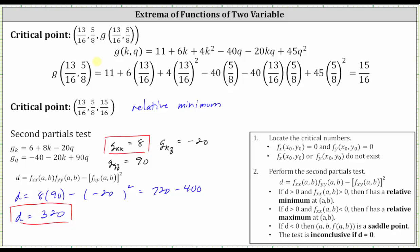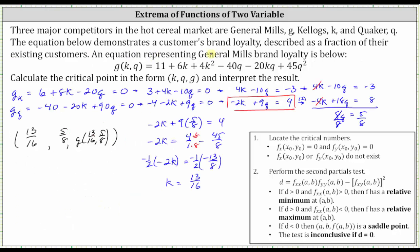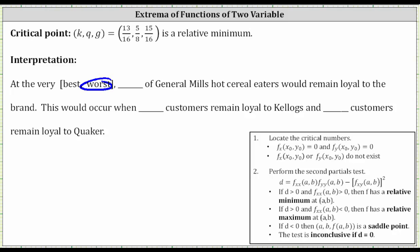Normally the location is the ordered pair k comma q — the first two values in the ordered triple — and the function value 15/16 is the actual relative minimum. Interpreting this result: the function value demonstrates the customer's brand loyalty described as a fraction of their existing customers. Because we have a relative minimum of 15/16, at the very worst, 15/16 of General Mills hot cereal eaters would remain loyal to the brand. This would occur when 13/16 customers remain loyal to Kellogg's and 5/8 customers remain loyal to Quaker — the values of k and q at the critical point.